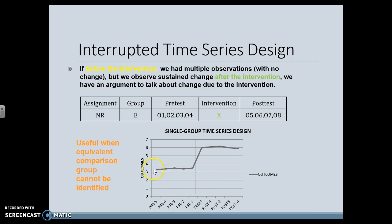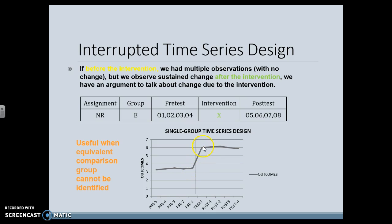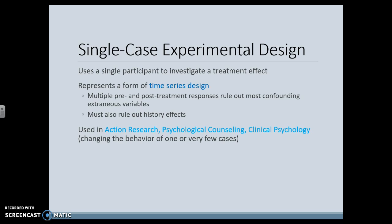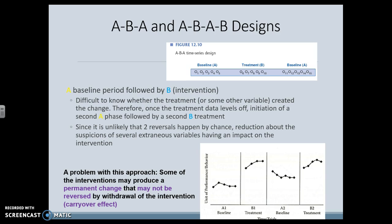Here you can see that the classroom was pretty much right in a certain range on their reading scores. Then an intervention happens, and after the intervention it dips a little bit but stays pretty much elevated. A single-case experiment means we have one person we are trying to investigate a treatment on. This is used all the time in action research, in counseling, and in psychology, where you're focusing on the behavior of one person. For example, if we had a kid with ADHD and we want to see if a drug is actually going to help them, we're just focusing on that one kid. We can do a baseline and then treatment, like we just talked about.